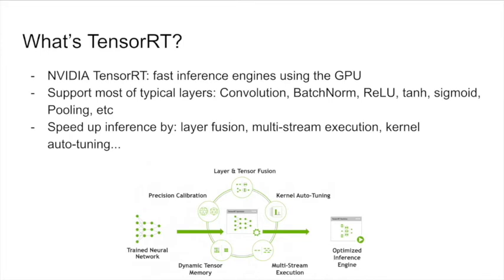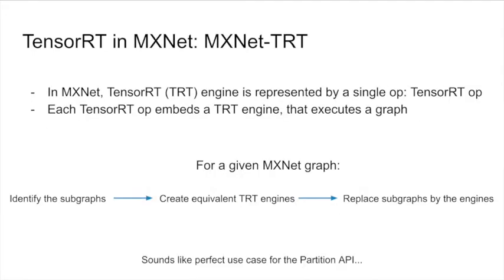TensorRT speeds up inference with techniques such as layer fusion, kernel autotuning, multi-stream execution, and more. We added a TensorRT op to MXNet that embeds a full-blown TensorRT engine. During its creation, this op takes an MXNet graph and converts it to a TensorRT engine. We want to replace some parts of our MXNet model with those TensorRT ops. If all operators are supported by TensorRT, it will replace the full MXNet graph with a single TensorRT op. To do so, we need three things: identify subgraphs compatible with TensorRT, create equivalent TensorRT op engines with the layers and parameters from those subgraphs, and replace the subgraphs in the model with these TensorRT ops.